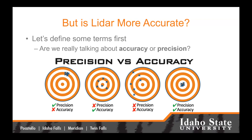But the question is: is LIDAR more accurate? Now we have to define some more terms. Are we talking about accuracy or precision, or maybe both? You've probably seen something like this before. On the far left, we see a target where we have very high precision but poor accuracy, assuming our goal is the bullseye. In the second image, we see pretty good accuracy, very close to the target, but the precision has a lot of dispersion. The third image shows poor precision and poor accuracy. The last on the right shows great precision and great accuracy — that's what we want. We want the best of both worlds.